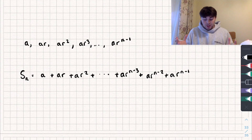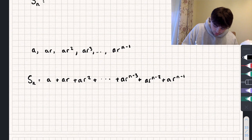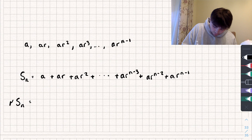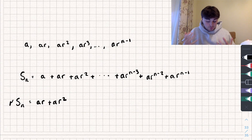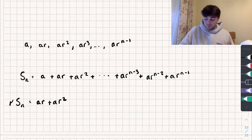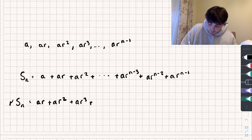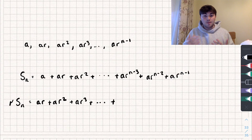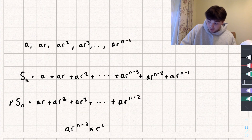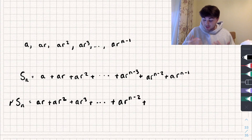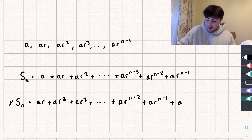Now I'm going to multiply everything by R — so R multiplied by S_n. This becomes AR plus AR squared, because I'm multiplying each term by R. We then have AR cubed, and so on. AR to the power of n minus 3, multiplied by R, adds the powers to give AR to the power of n minus 2. Continuing, AR to the power of n minus 2 becomes AR to the power of n minus 1, and the final term AR to the power of n minus 1 becomes AR to the power of n.